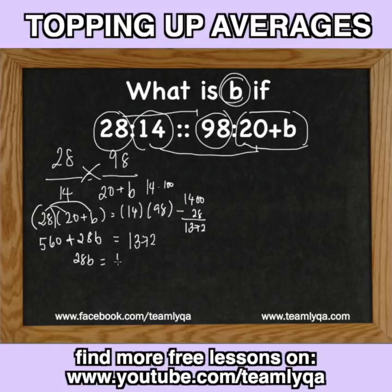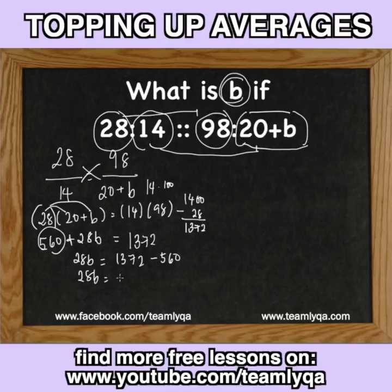28B is equal to 1,372. We move 560 to the other side, so it becomes minus 560. 28B is equal to 1,372 minus 560 — that would be 812. We divide by 28. The process is a bit long, so let's not reveal the final answer just yet.